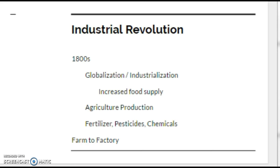Farming and food production became increasingly specialized. Nowadays we don't necessarily think about where our food comes from. We have what is called the farm-to-factory model: vegetables are harvested, shipped to cities or factories, processed or canned in some way, and then distributed for consumption.